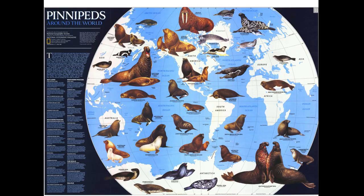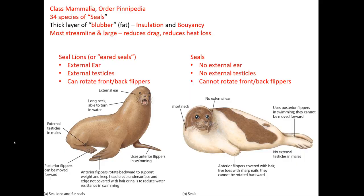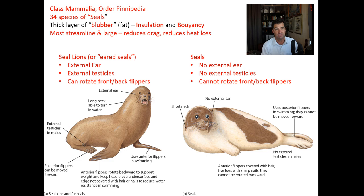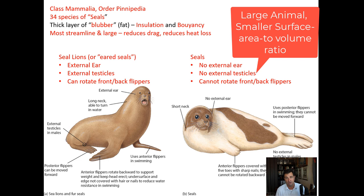We'll start by talking about the pinnipeds — one of the largest groups of marine mammals, found all over the world. They're in class Mammalia, order Pinnipedia, with about 34 species, collectively called seals. They have a really thick layer of blubber that keeps them insulated in cold water, provides buoyancy, and helps them float. Most are very streamlined and large, which reduces drag and heat loss due to their relatively small surface area compared to volume.